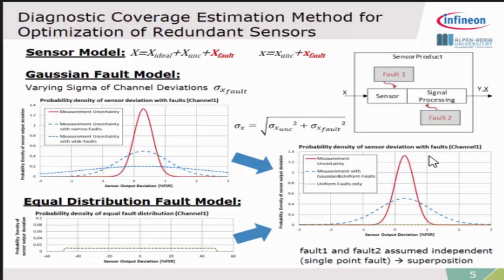The tricky thing here is, especially for Gaussian faults, we don't know the standard deviation of the faults. The idea here is to make a varying standard deviation, so we analyze all possible standard deviations from zero to infinity and just take the worst case. We will see later on how this works.